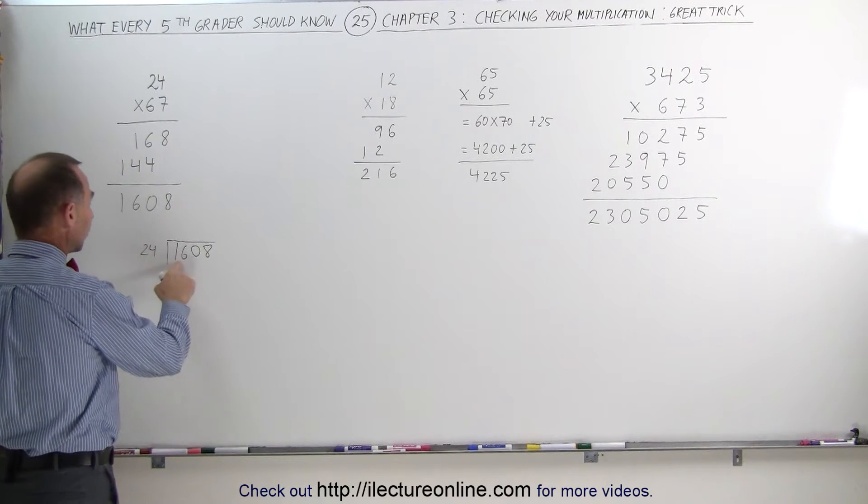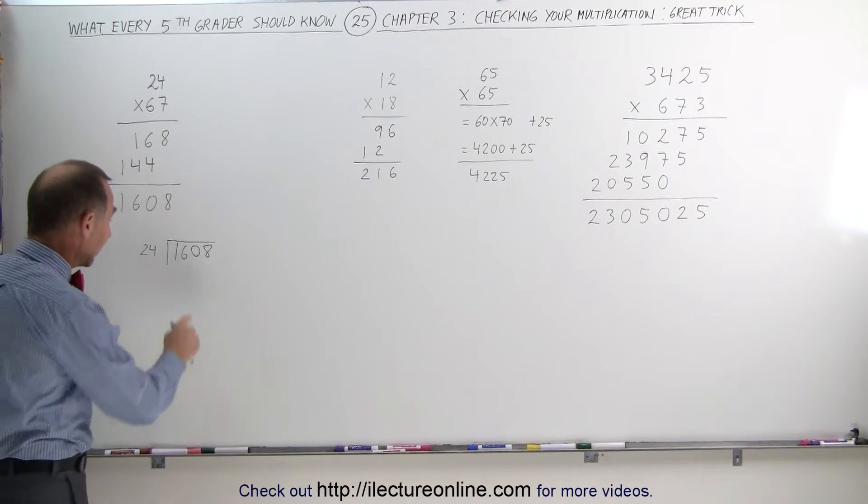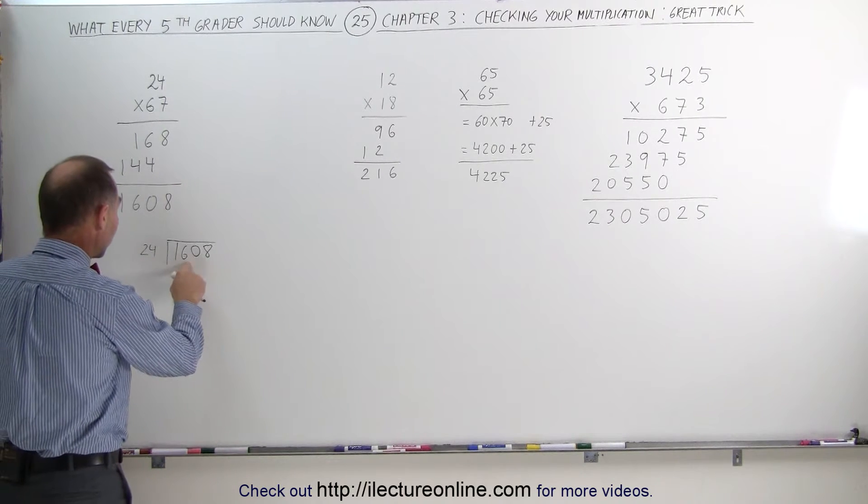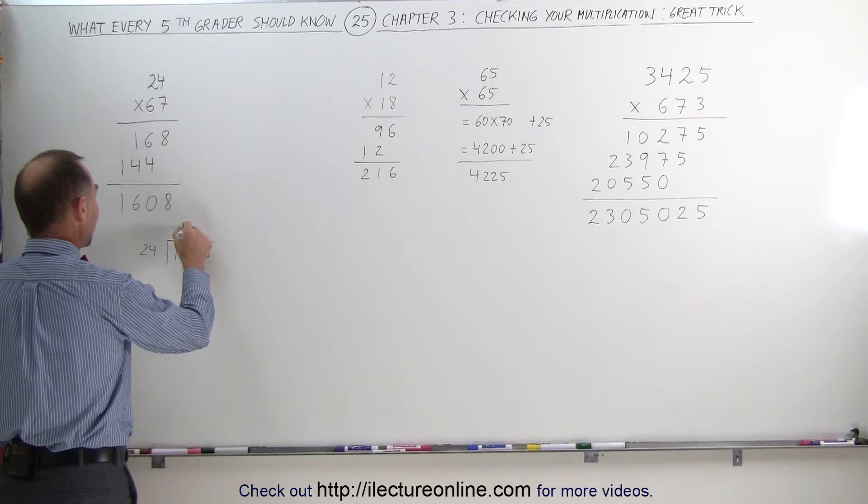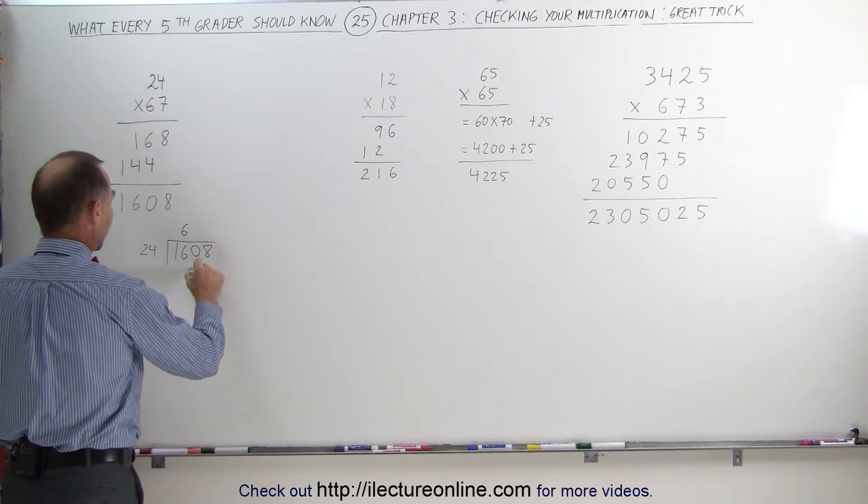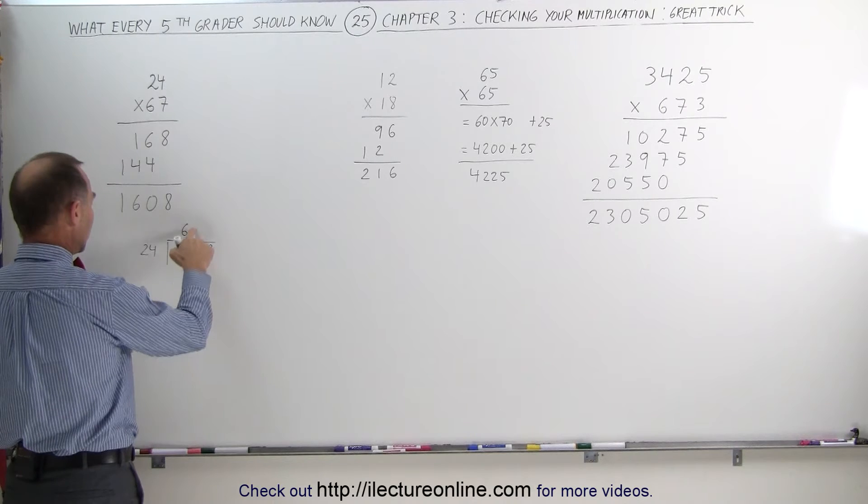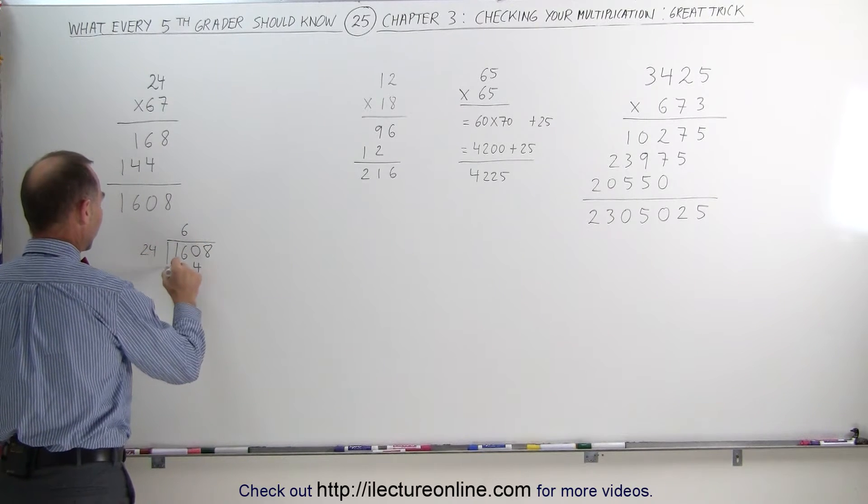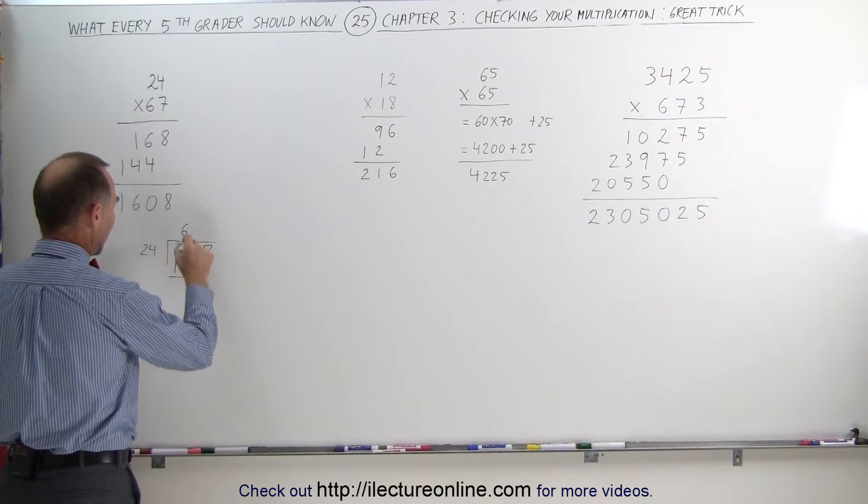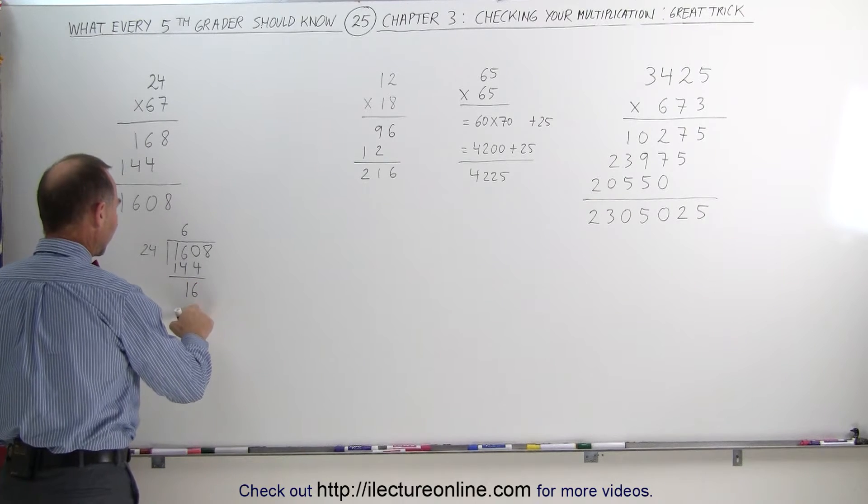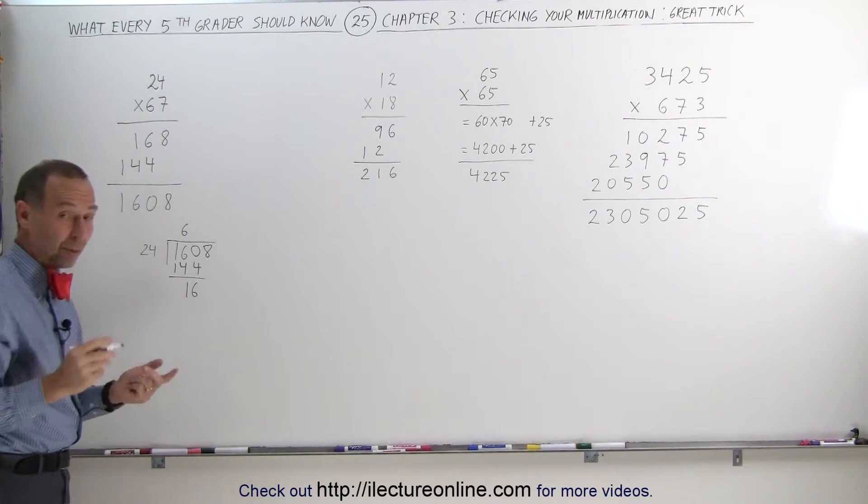So they go 24 goes into 16, well it doesn't go, so now they take one more number, 24 goes into 160, they would guess maybe six times, six times four is 24, write down the four, remember the two, six times two is 12 plus two is 14, and when you subtract remainder 16, which is less than 24, so that's the correct number.